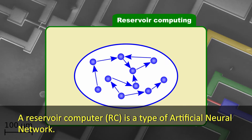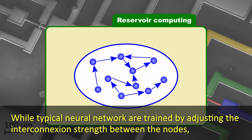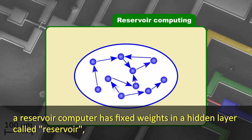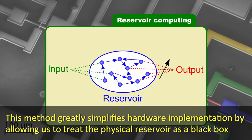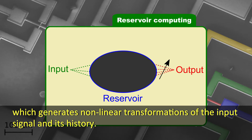A reservoir computer is a type of artificial neural network. While typical neural nets are trained by adjusting the interconnection strength between the nodes, a reservoir computer has fixed weights in a hidden layer called reservoir, and a simple linear output layer is trained to reproduce the desired output signal. This method greatly simplifies hardware implementation by allowing us to treat the physical reservoir as a black box, which generates nonlinear transformations of the input signal and its history.